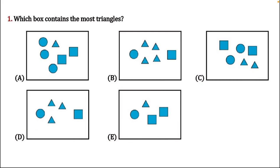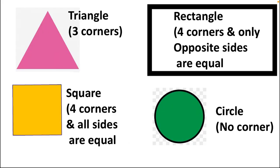Before solving this question, we need to understand the geometrical shapes because different shapes are given in a big box. On the top left corner is the triangle — its definition is that it is having three corners, shown in pink color. Right below is the square, which has four corners and all sides are equal, shown in yellow color. Next to the square is the circle, which is a rounded shape in green color and has no corners.